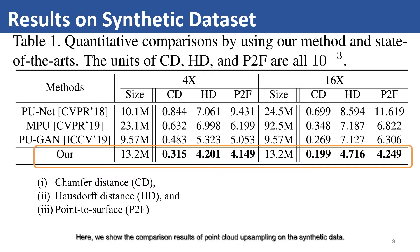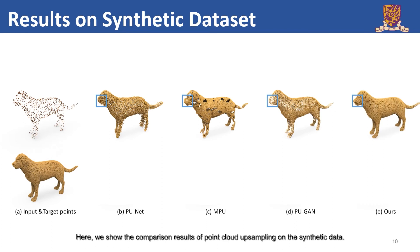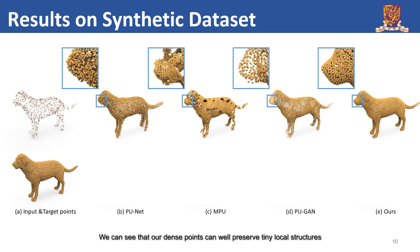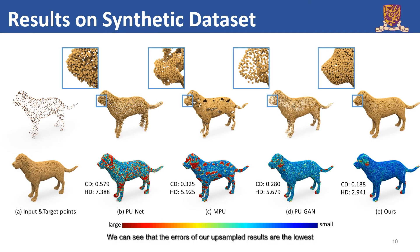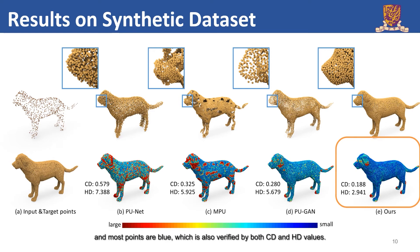Here, we show the visual comparison results of point cloud upsampling on the synthetic data. We can see that our dense points can well preserve tiny local structures with a uniform point distribution. We also show the associated error maps, where the colors represent the nearest distance from the target point set to the predicted point set. We can see that the errors of our upsampled results are the lowest and most points are blue, which is also verified by both CD and HD values.